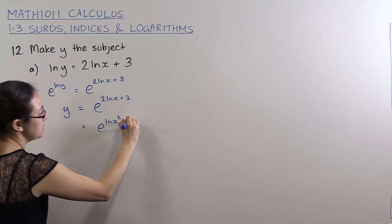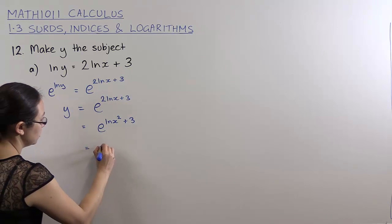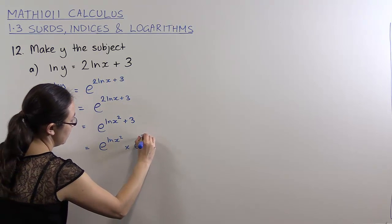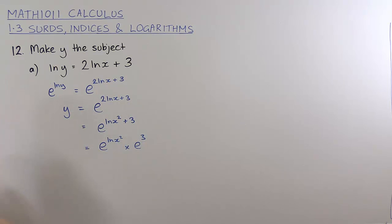Take that 2 upstairs. Second of all, I can use my index laws to rewrite this as e to the log base e of x squared times e to the power of 3. If you multiply and your bases are the same, you would add the indices.